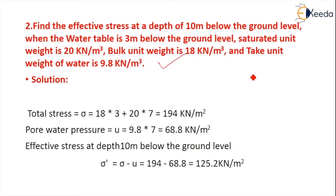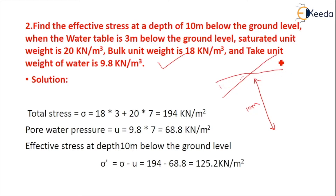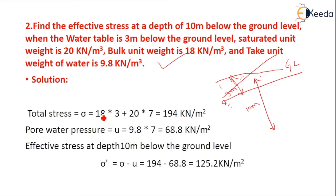We need to find the effective stress at a depth of 10 meters from the ground level. The water table is 3 meters below the ground level. Total stress sigma equals the bulk unit weight multiplied by the depth above the water table: 18 into 3, plus the saturated unit weight for the remaining depth.